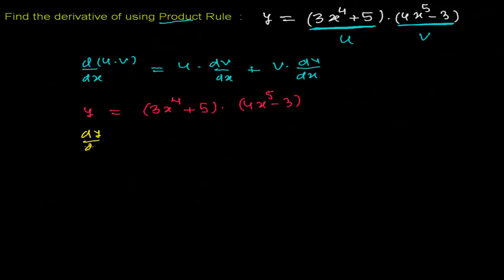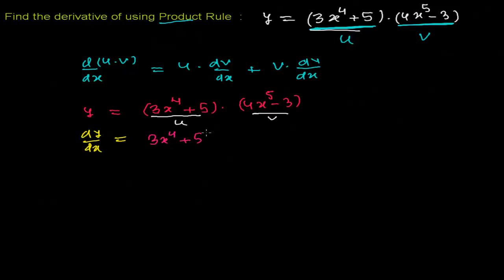So dy/dx equals — now I'm going to write the first function first. This part is my u: (3x to the power 4 plus 5). I write it first, then times the derivative of the second function, which is d/dx of (4x to the power 5 minus 3). I'm done with this first part.